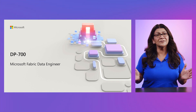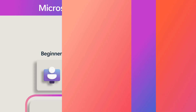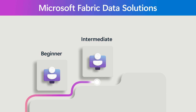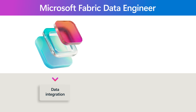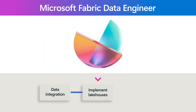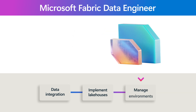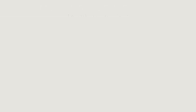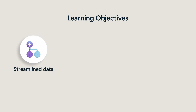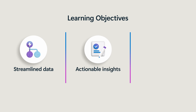This course is one of my personal favorites to learn about Microsoft Fabric. This intermediate course introduces you to implementing data engineering solutions using Microsoft Fabric. It's designed for data professionals who need to build scalable, secure, and efficient data pipelines and architectures for enterprise-scale analytics. It covers things like ingesting and transforming data, implementing lakehouses and real-time intelligence, and managing environments within Microsoft Fabric. By the end of this course, you'll learn how to turn messy, disconnected data into streamlined, actionable insights using Microsoft Fabric.